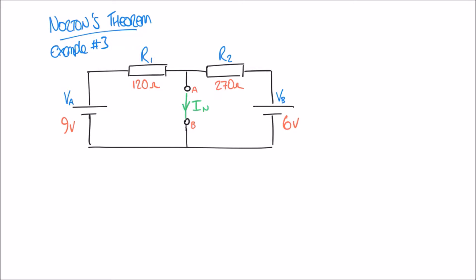First, let's remove VB from consideration by simply shorting out that cell — replacing it with a short circuit, just imagining there's a wire in its place. Now considering the current that flows from VA: starting from the cell, current flows through R1, reaches a junction at the top of the circuit, and has a choice — flow from terminal A to terminal B through a wire, or through a resistor back to the supply.